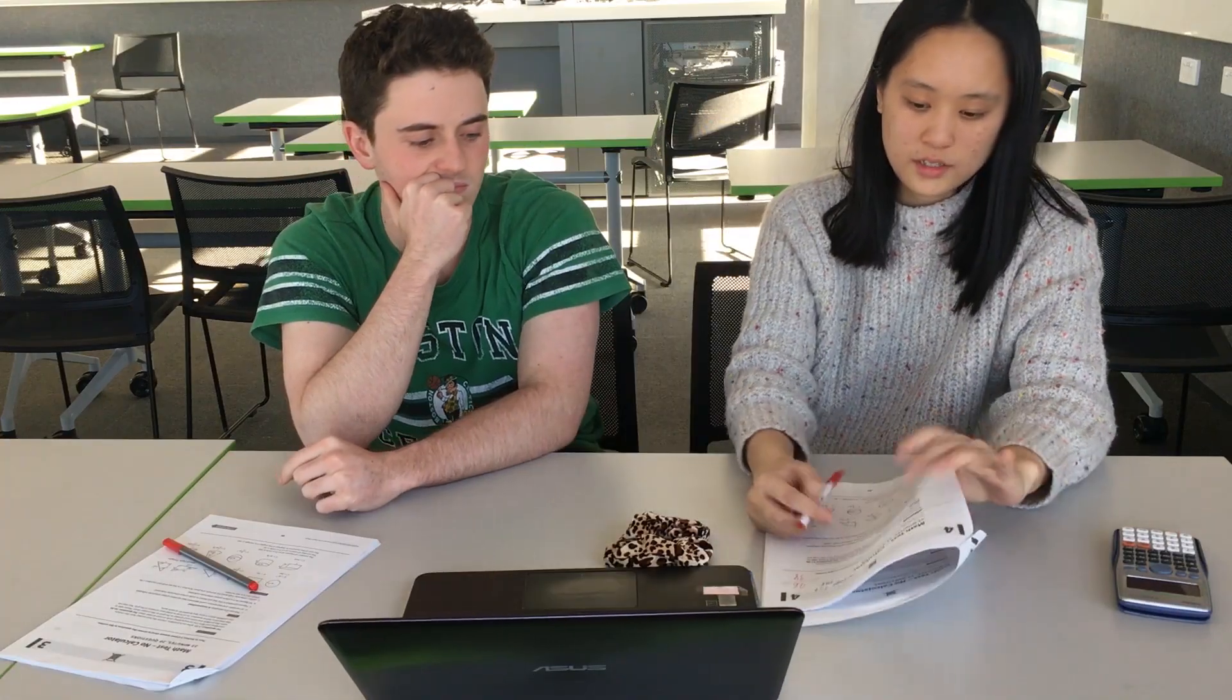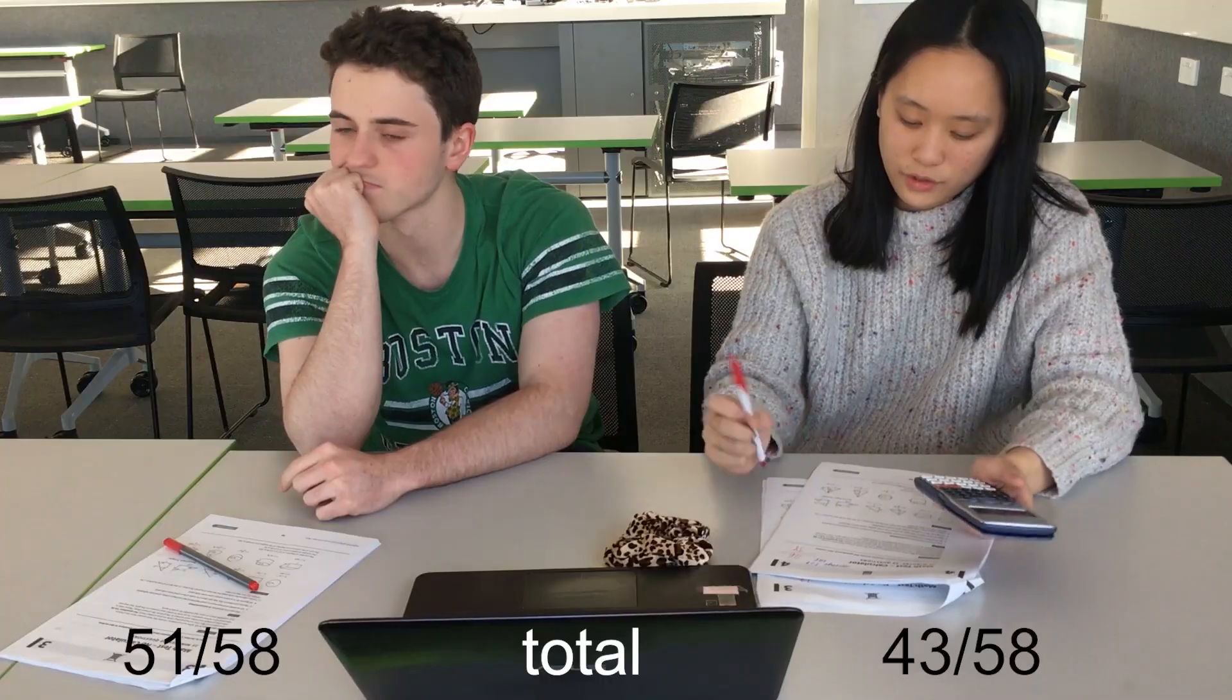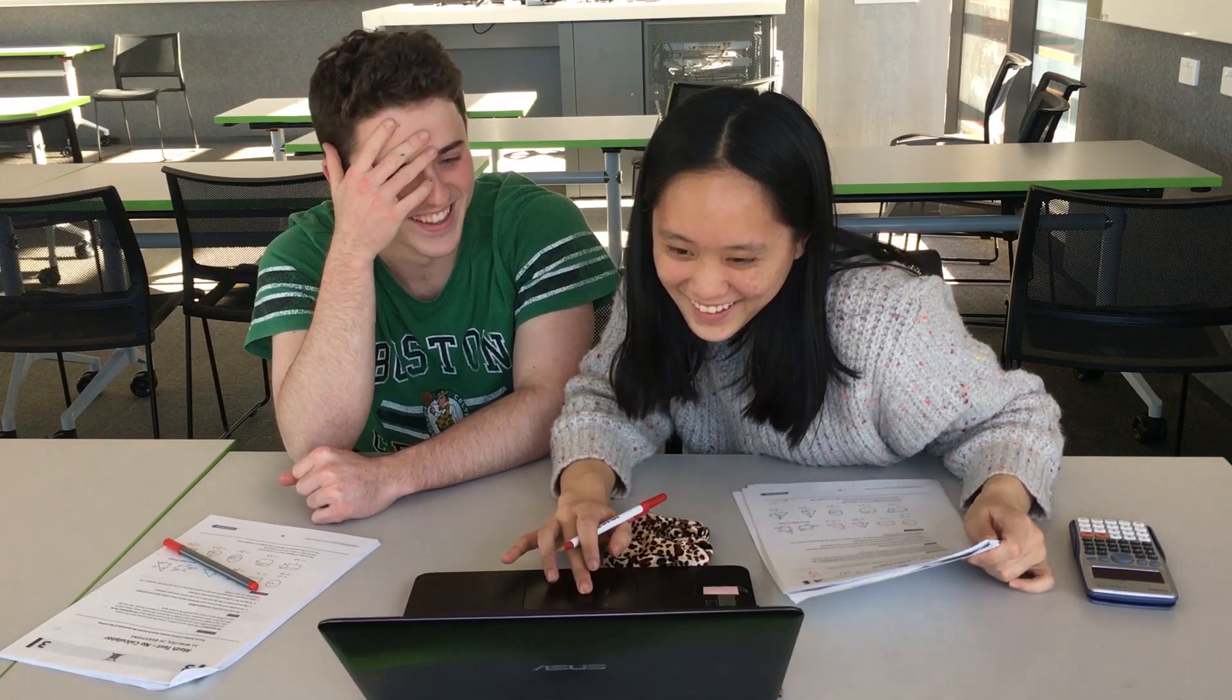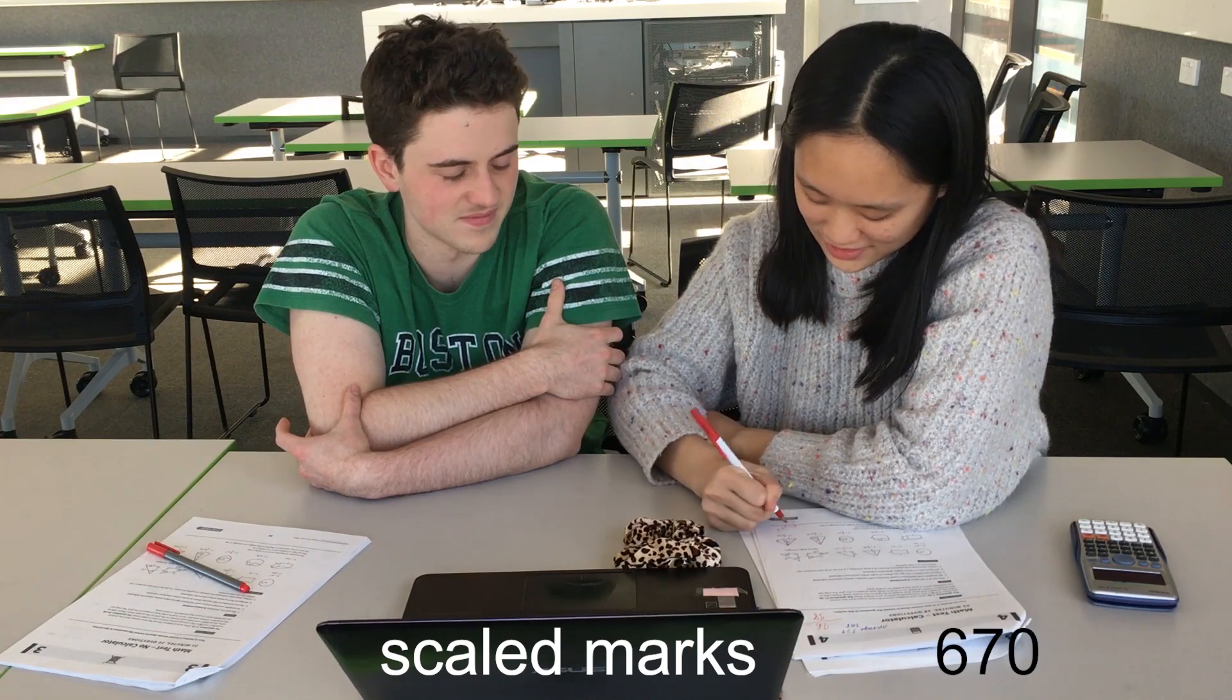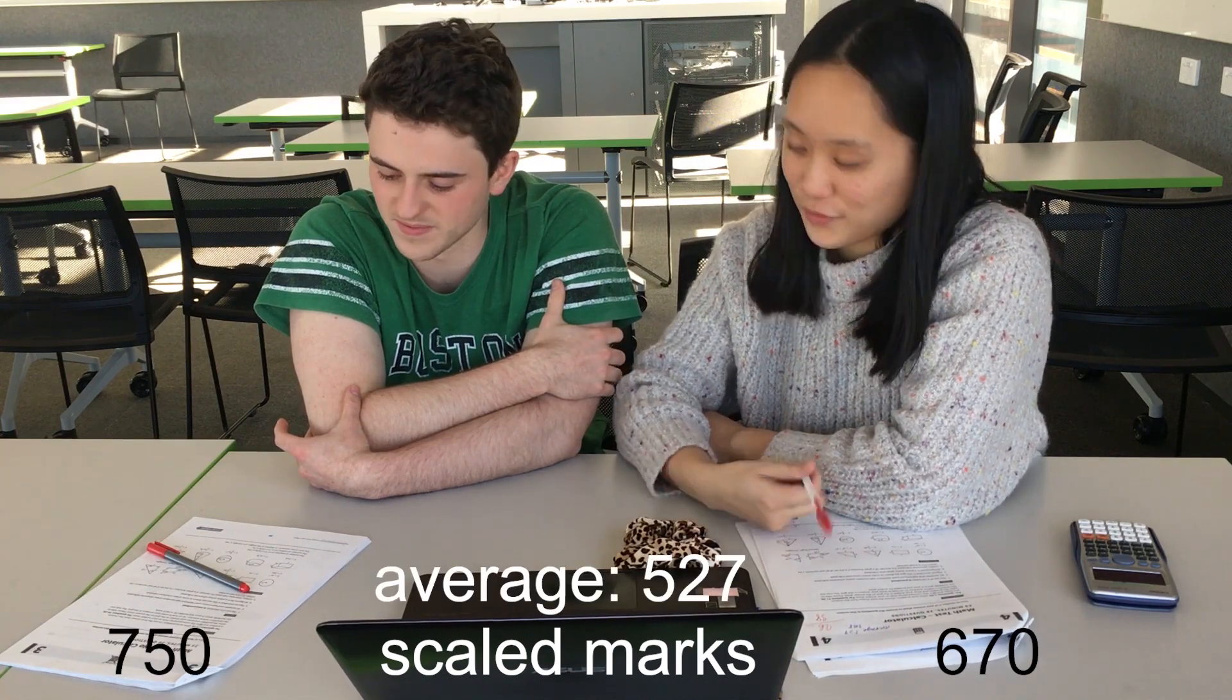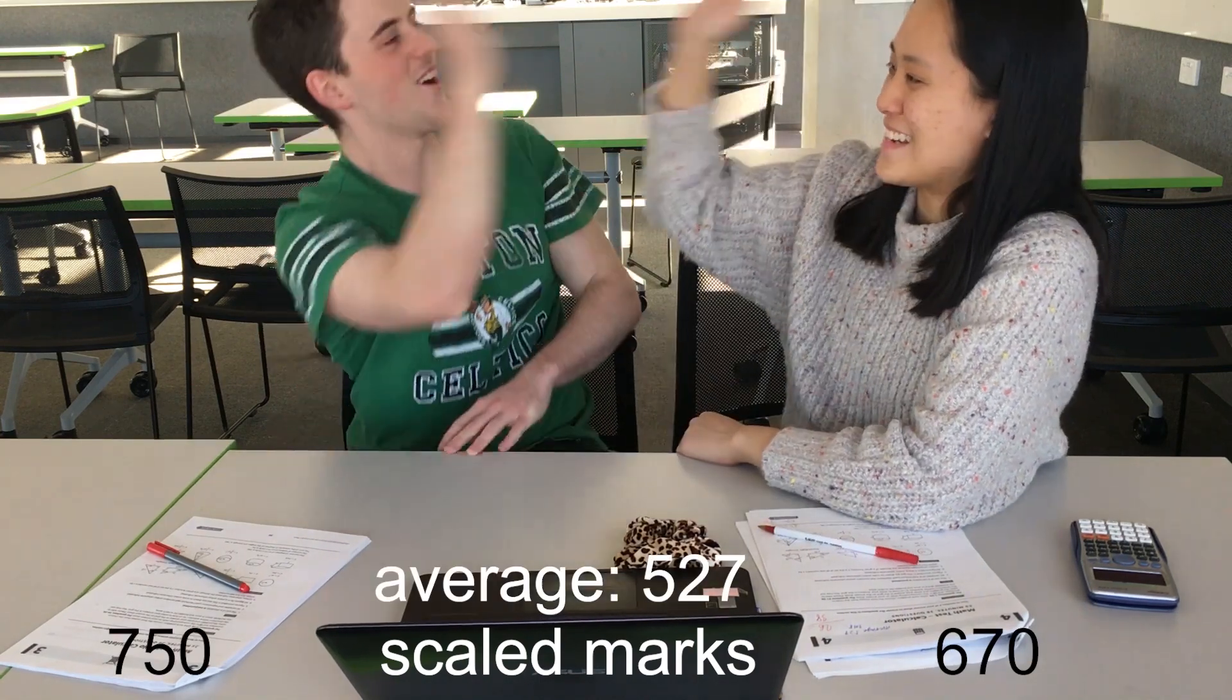So add the two numbers you got together. So 43, what's your one? 51. Oh, we're heaps above average. What? Where are we? Oh, well, I don't know about you. Oh no, you are. They have this scale chart. I'll put it on the screen right now. I'm getting so confused. I don't know how it really works. So I got 670 and you got 750. And the average is 527. So we're both above average.